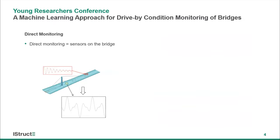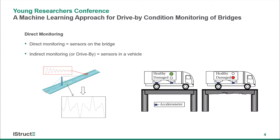It is of course important that we monitor our structures and understand how safe they are and how they're behaving. The idea of monitoring bridges isn't a new one. Traditionally, monitoring means putting sensors directly on the bridge — what we'd call direct monitoring — measuring the behaviour and trying to understand if there's any indication of change in structural behaviour or damage. More recently there's been a move towards indirect approaches: not putting sensors on the bridge but on a vehicle or a drone. What I'm talking about today is a drive-by technique — putting accelerometers inside a vehicle and trying to infer something about how the bridge is behaving purely from sensors in the vehicle.